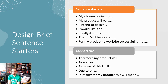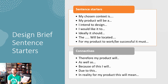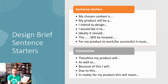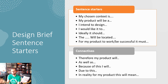Here are some sentence starters you may find useful: 'I intend to design...', 'I would like to design...', 'maybe...' — rather than 'I must do this.' You don't want to be too specific or too focused at this point. There's also a set of connectives on screen that may be useful for linking what you've said to the reason why you want it.